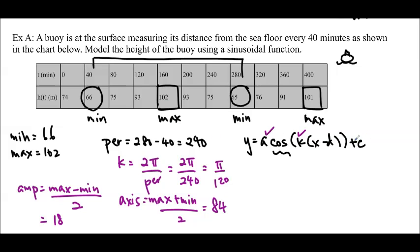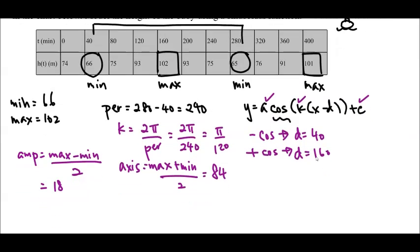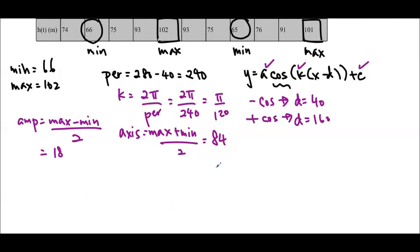The axis is max plus min divided by 2, so 102 plus 66, which gives me 168, divided by 2, gives me 84. So now I have my a and my c. I just have to figure out what my phase shift is, and the phase shift depends on which function you want to use. So I'm going to use the minimum, so that means I'm going to use negative cos. If I use negative cos, that means d is equal to 40, which is the x value. Or if I wanted to use positive cos, I could use d as 160.